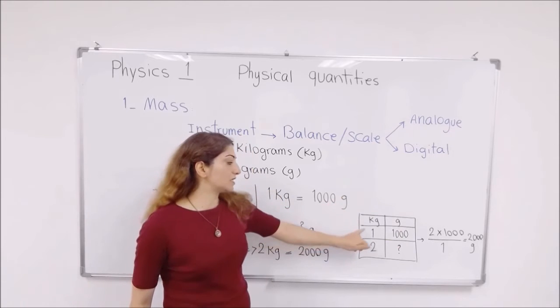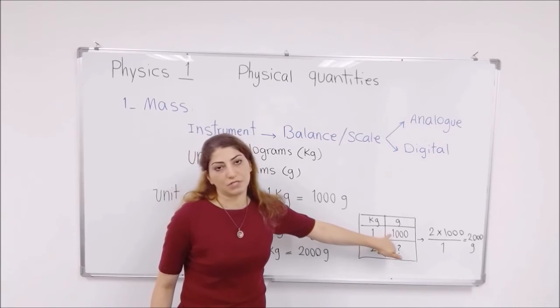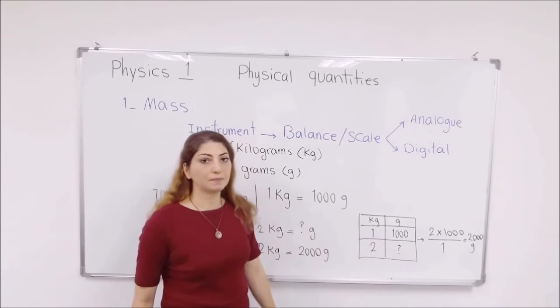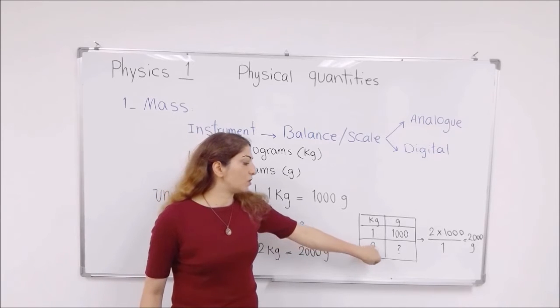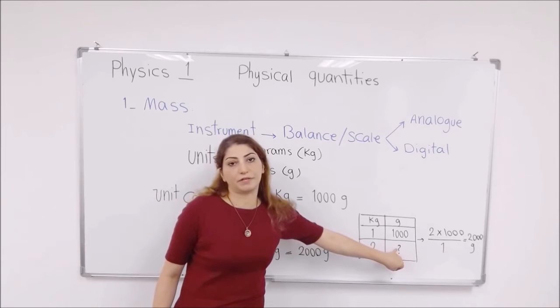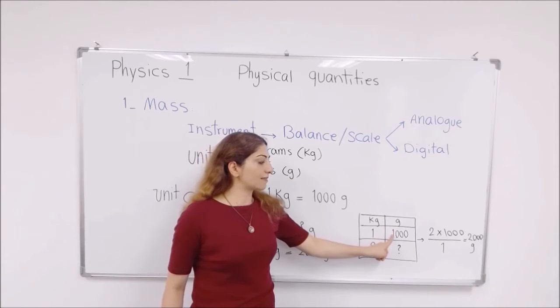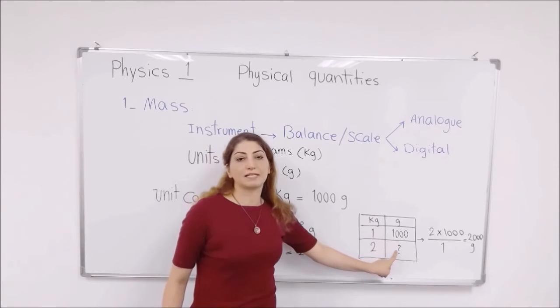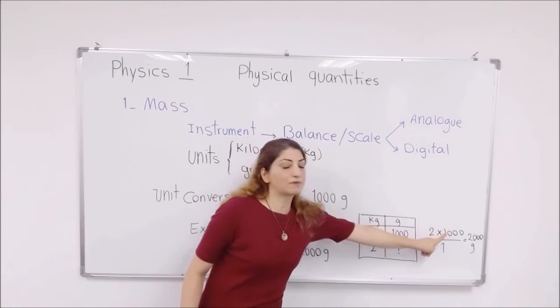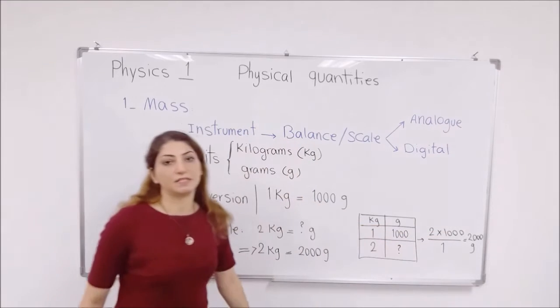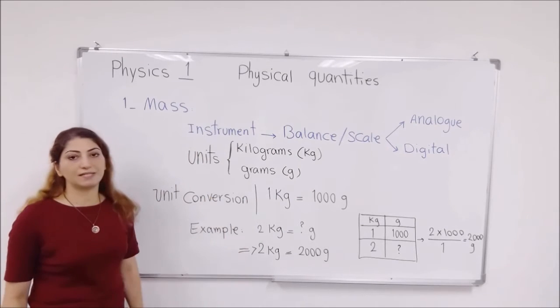What we know is that each one kilogram is equal to one thousand grams. What is asked from you is each two kilograms is equal to how many grams? This is what we don't know here, so we want to calculate. So two times one thousand divided by one, the answer should be written on this box. So two times one thousand divided by one is equal to two thousand grams.